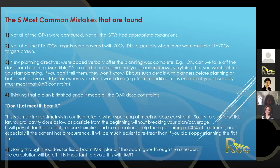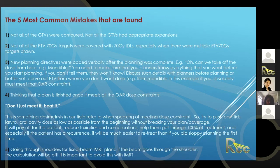Fifth mistake: sending beams through the shoulder for IMRT plans — this is absolutely unnecessary and physics will kick back your plan. Avoid it from the beginning rather than replanning. For VMAT plans with patients who have very broad shoulders, make sure you have the entire CT dataset. If shoulders are cut off and you're using full arcs, your plan can get kicked back if the entire CT is not in the field of view.